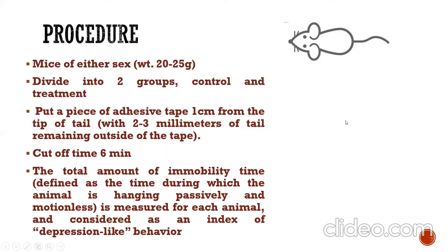After taking the mice, put an adhesive tape one centimeter from the tip of the tail, ensuring that two to three millimeters of tail remain outside the tape. The tape should be strong enough to prevent the mouse from falling and should not damage the skin of the tail.